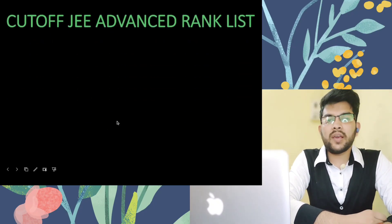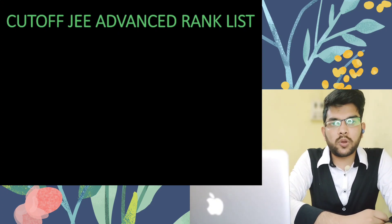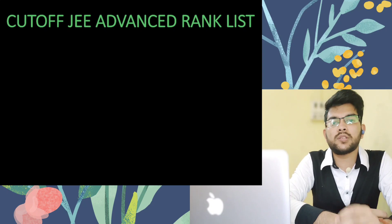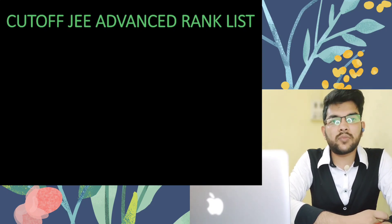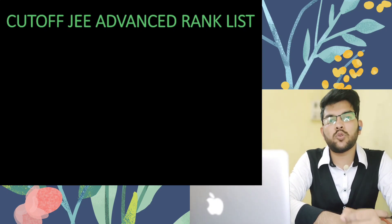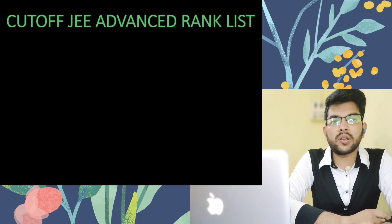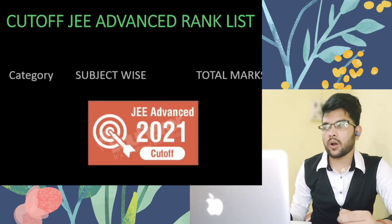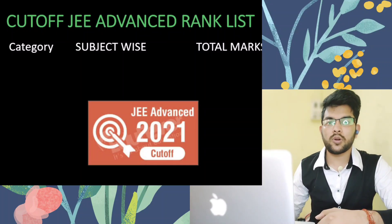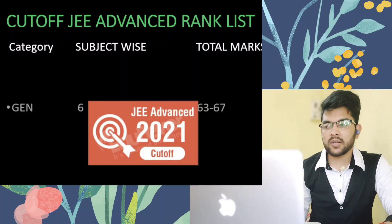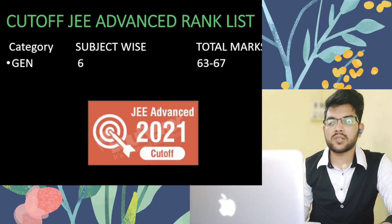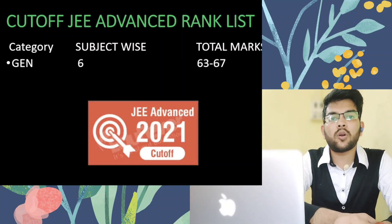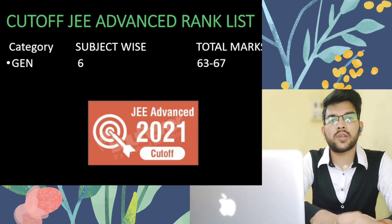First, I will talk about the cutoff for the JEE Advanced rank list — how much marks you need to score in the JEE Advanced examination to be included in the rank list. There are two types of cutoff: first is the JEE Mains cutoff that makes you eligible for JEE Advanced, and second, once you appear in JEE Advanced, you must score a minimum marks to be included in its rank list. The total marks of the JEE Advanced examination will be revealed on the exam date itself, but you can expect it to be around 360 to 380 marks, similar to previous years.